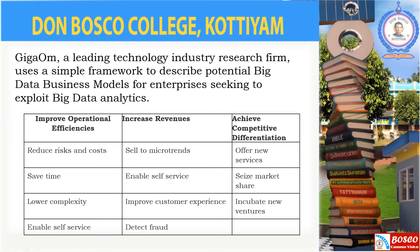A leading technology industry research firm, Giga Om, uses a simple framework to describe the potential big data business models for enterprises. The three terms they explain are: to improve operational efficiencies, to increase revenue, and to achieve competitive differentiation. Points to improve operational efficiencies include reducing risk and cost, saving time, lowering complexity, and enabling self-service.